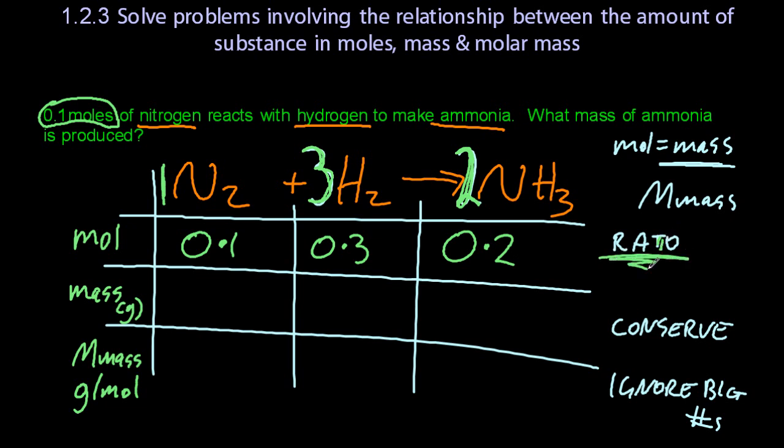Now we're not quite finished, because the question asks for the mass of ammonia. Well, the molar mass of ammonia is 14 and 1 and 1 and 1, which is 17. Remember, ignore the big numbers. Don't multiply that all by 2. And now moles times molar mass is mass, so 0.2 times 17 is 3.4. And that's my answer, 3.4 grams.